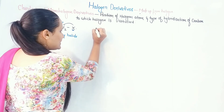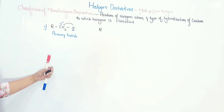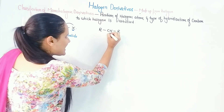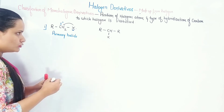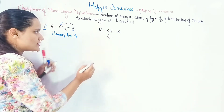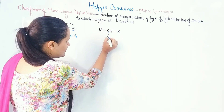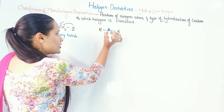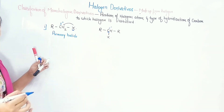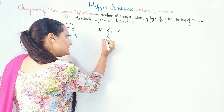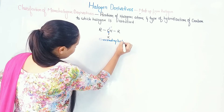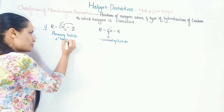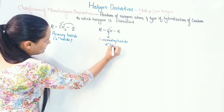For the secondary case: I have R-CH(-R)-X, where the carbon bearing the halogen is attached to one carbon on this side and another carbon on the other side. This is a 2-degree carbon because it has two adjacent carbons, so we call it a secondary halide. Primary halide is 1-degree, secondary halide is 2-degree. For the tertiary case, the carbon bearing the halogen is attached to three other carbons on all sides — that is a 3-degree carbon, also known as a tertiary halide.